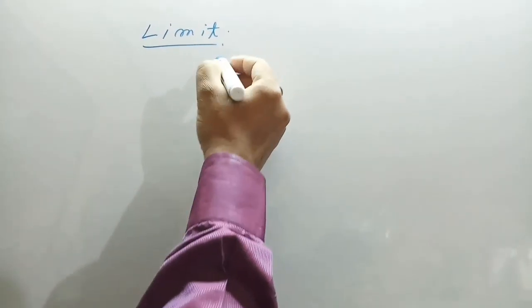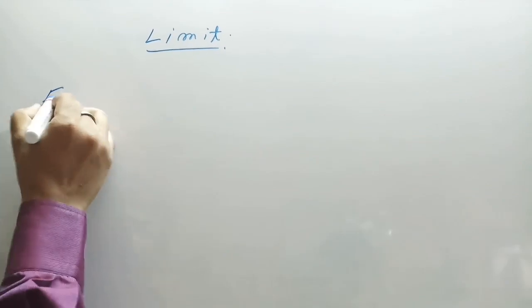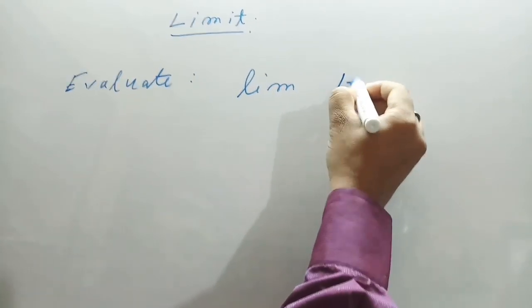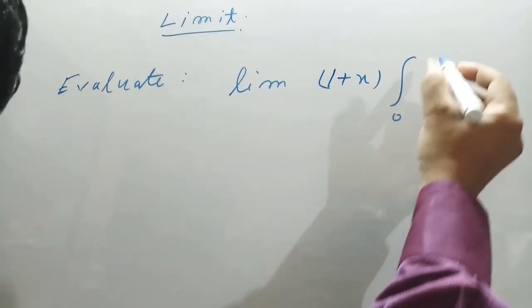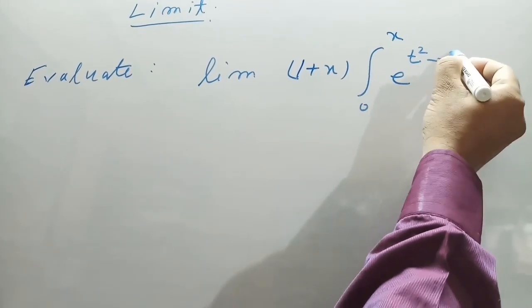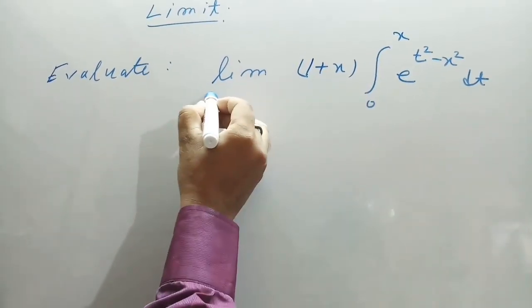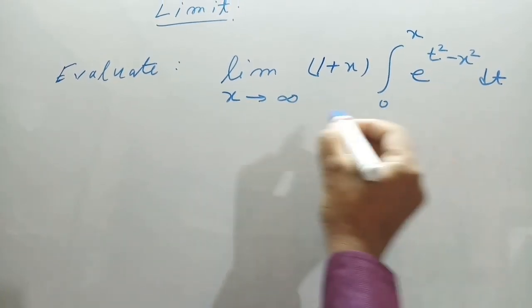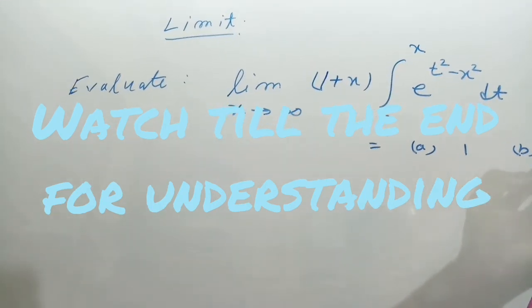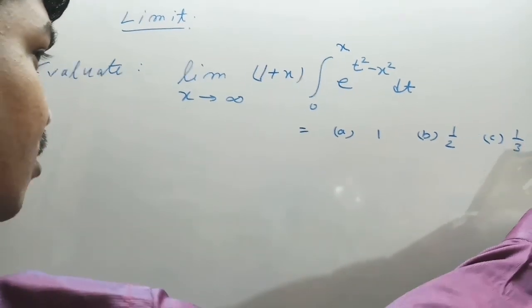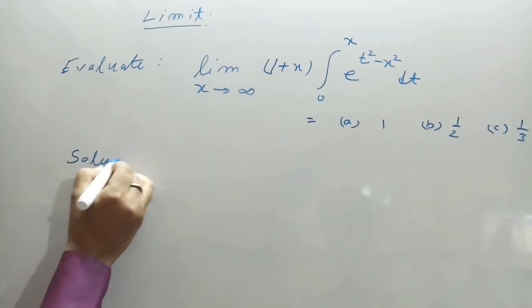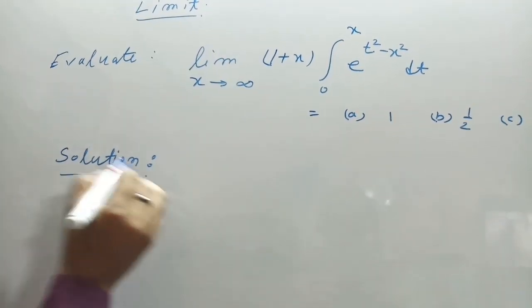Evaluate the limit of (1 + x) times the integral from 0 to x of e^(t² − x²) dt, as x tends to infinity. The options are: A is 1, B is half, C is one-third, and D is 2.